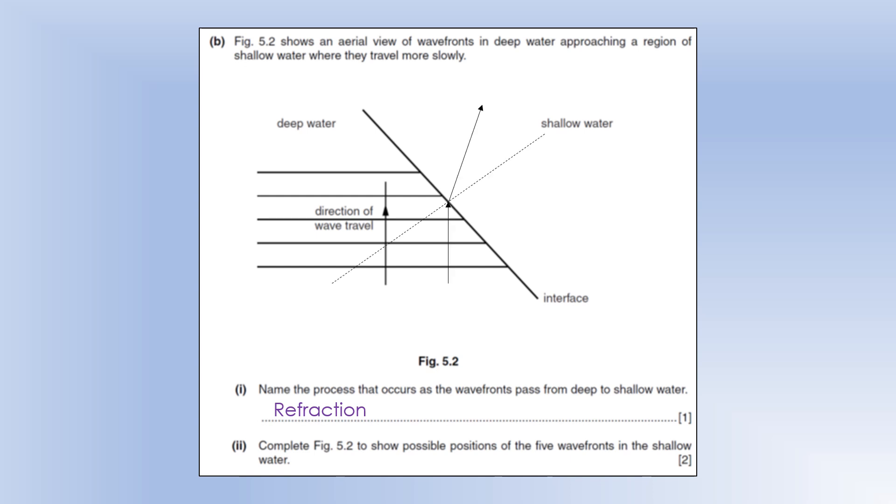So show possible positions of the five wavefronts in the shallow water. First of all I'm going to draw some rays on here, so rays are perpendicular to the wavefronts. And I've also drawn in a normal to the interface, because if it's going to slow down in shallow water it's going to bend towards the normal, so we can see where the rays would go. And then all we have to do is draw lines perpendicular to the rays that are attached to the end of the existing wavefronts, so we get something that looks a little bit like this.